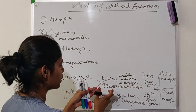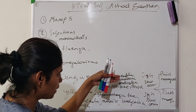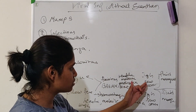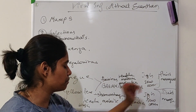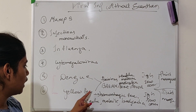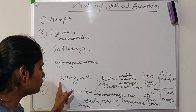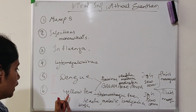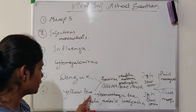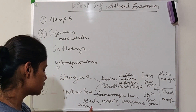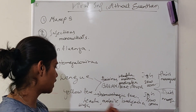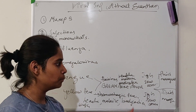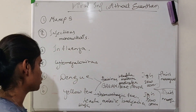Dengue is also called breakbone fever. It has headache, malaise, and arthralgia — very severe. Diagnosis is IgG seroconversion. Treatment is fluid management. Most importantly, when you have dengue, you have leukopenia and thrombocytopenia. In yellow fever, it is a hemorrhagic fever. The symptoms are headache, malaise, bradycardia, and cough. Diagnosis is IgG seroconversion. Treatment is fluid management.